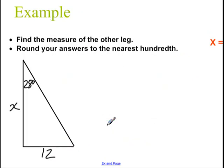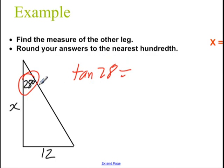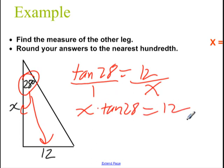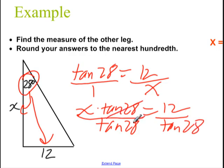Let's look at one more example. Here's another right triangle. I'm going to write a trig equation to help me solve this. My angle is 28 degrees, so the tangent of 28 degrees equals the opposite over the adjacent. The opposite leg is 12 and the adjacent leg is x. To solve for x, I'll put that over 1 and cross multiply: x times the tangent of 28 equals 1 times 12.